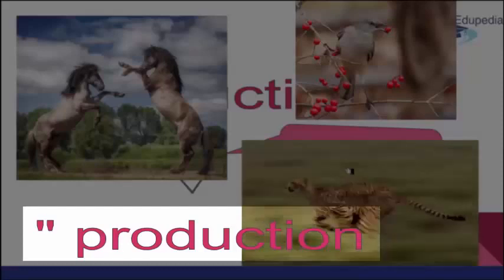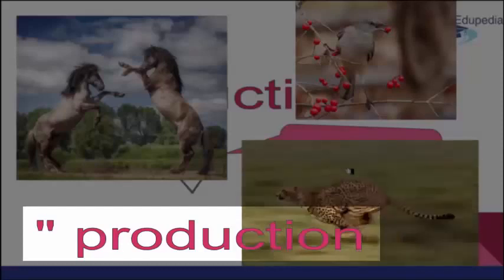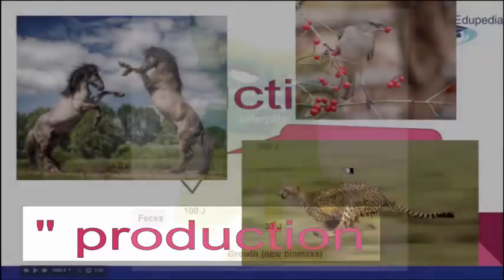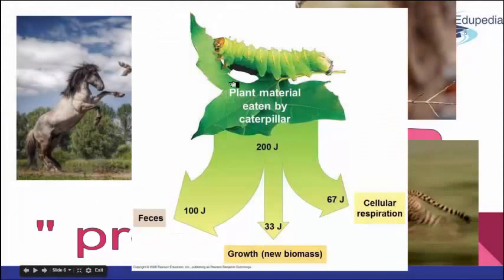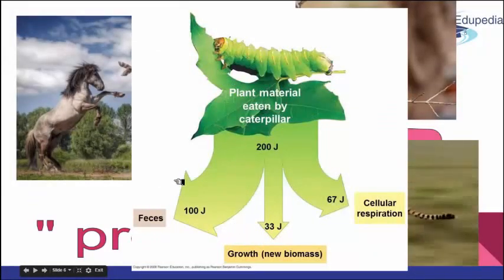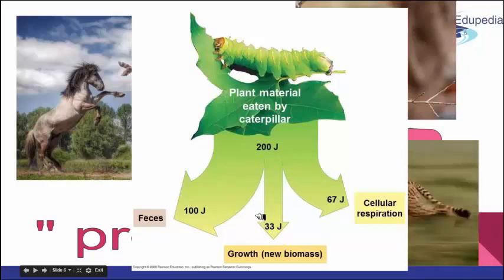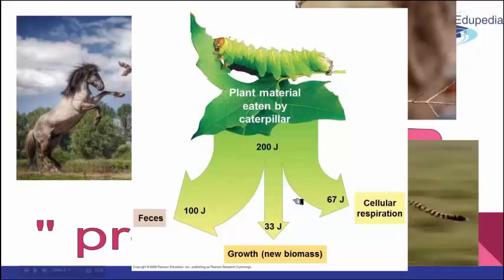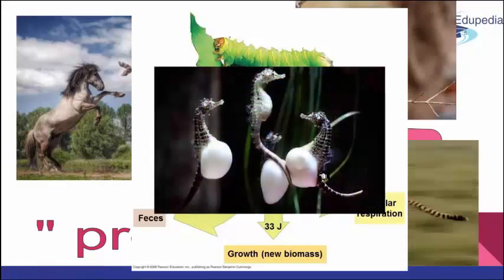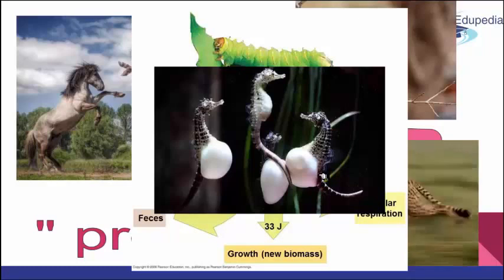Secondary production goes into growth of new tissues and production of young. For example, a caterpillar eating plant material: most of it becomes a byproduct of metabolism, another part goes to cellular respiration and heat loss, and then there is a part going to the growth of the animal itself — forming new tissues and increasing body size. The other option is reproduction, taking care of young and offspring maintenance. Secondary productivity is greatest when the birth rate of the population and the growth rate of individuals are both high.